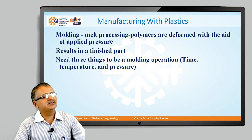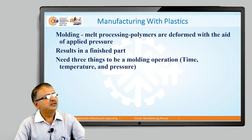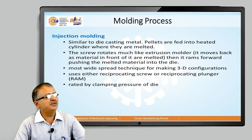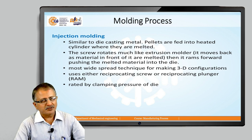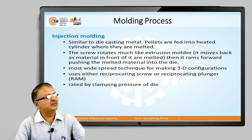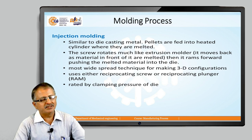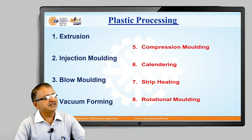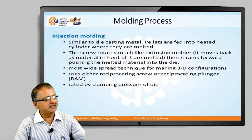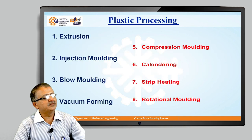Molding is where polymers are deformed with the aid of applied pressure, resulting in a finished part. The molding operation parameters are time, temperature, and pressure. Injection molding: pallets are fed into a heated cylinder where they are melted. The screw rotates much like an extrusion molder and pushes the melted material into the die — the most widespread technique for 3D configuration, using a reciprocating screw or plunger, rated by clamping pressure of a die.